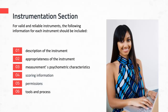Next, include permissions — talk about whether you gained permission from a publisher or an author, and include letters from publishers or authors in your appendix. Finally, talk about the instrumentation process: what tools will you use to administer the instrument? Are you going to put it online using something like SurveyMonkey, Google Forms, or Qualtrics? What's the process for administering it? Make sure this is balanced with what you put in your procedures section so it's not redundant.